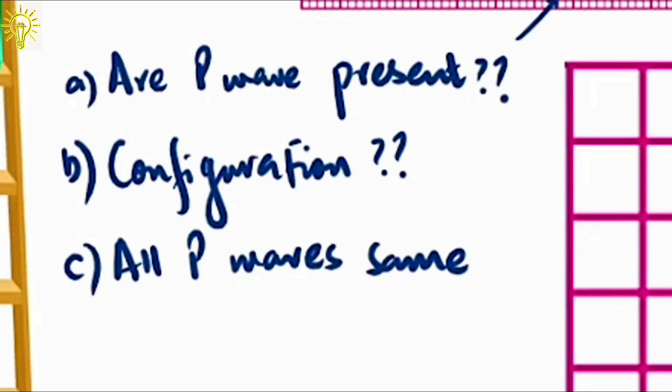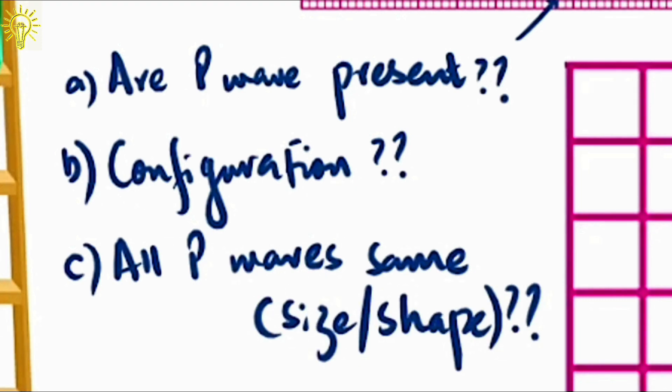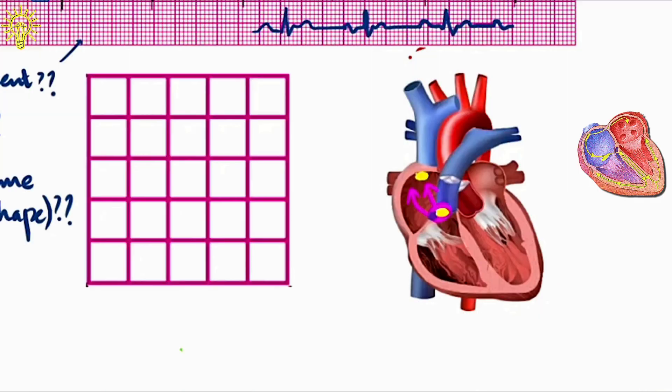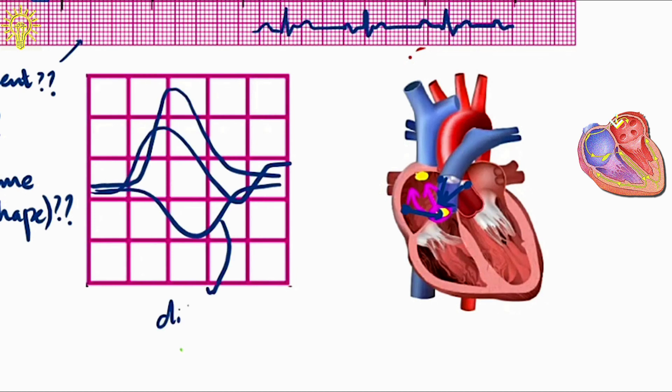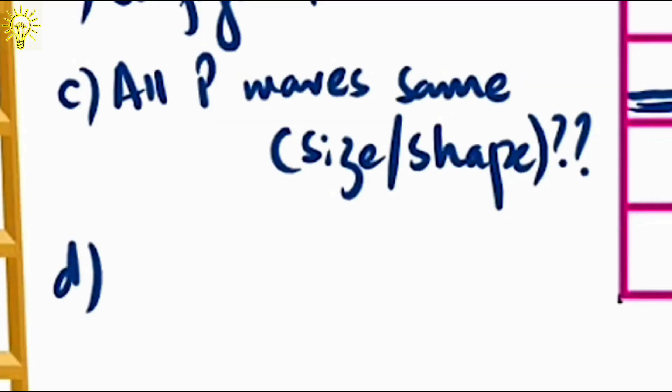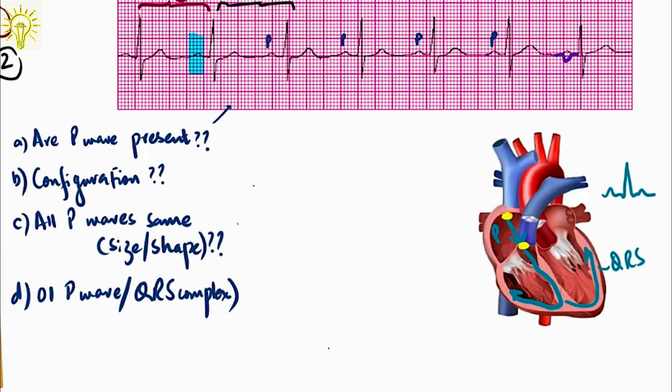Third question you must ask is, are all P waves similar? For example, if you see different shapes and sizes like positive, biphasic, negative, it means there are multiple sites of origin of impulse, which happens in multifocal atrial tachycardias. Finally, ask yourself, is there a P wave for every QRS complex? In the waveform in blue, you can see a P wave before QRS but one isolated P wave that did not generate a QRS. This means a drop beat, which happens when impulse coming from SA node is blocked at AV node. In other words, a heart block.